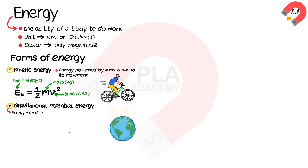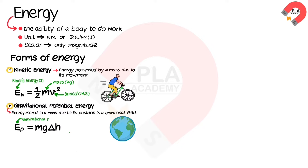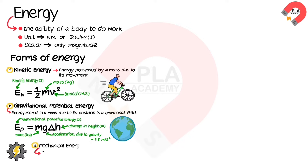Gravitational potential energy is the energy stored in a mass due to its position in a gravitational field. Its formula can be written as E_P = mgΔh, where E_P is the gravitational potential energy in Joules, m is the mass in kilograms, g is the acceleration due to gravity equals 9.8 m/s², and Δh is the change in height in meters.